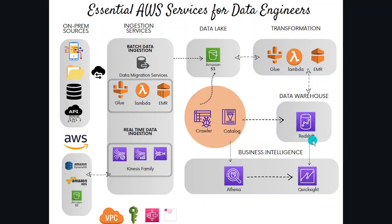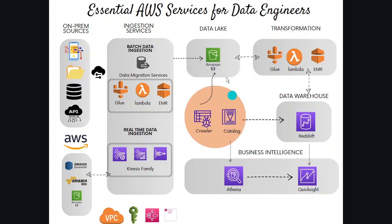Redshift is a fully managed data warehousing service, and data engineers use Redshift to run complex queries on large datasets and build business intelligence on top of it. We also use the AWS Glue Crawler to populate the data catalog. The Crawler runs on Amazon S3 and populates the data catalog, and both the Crawler and the catalog are part of AWS Glue. This catalog acts as a central repository for many services in the AWS account — in this case on top of S3, but it can serve as a central data catalog for many other services.